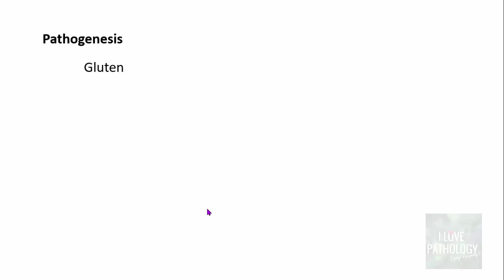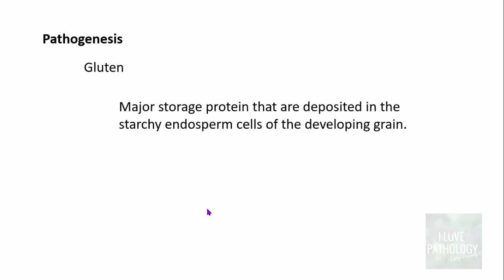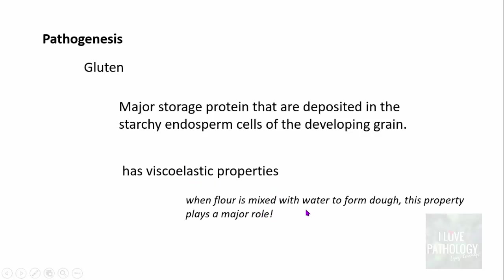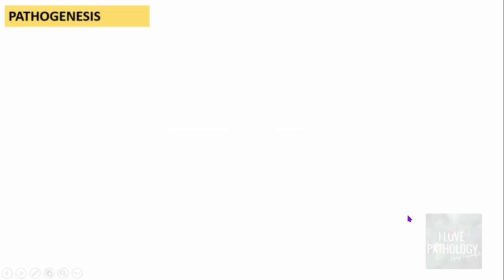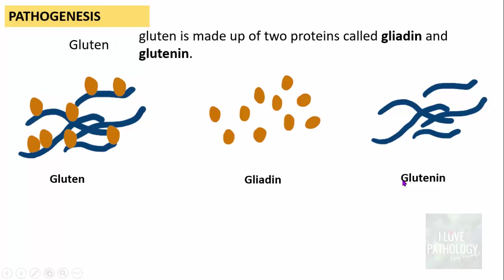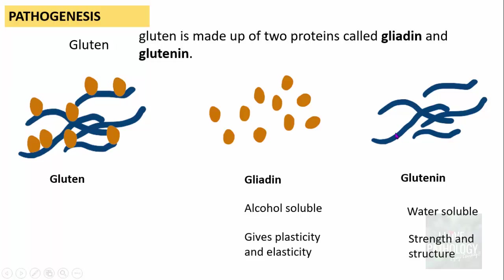Gluten is the most important culprit. Gluten is basically a major storage protein deposited in starchy endosperm cells of the developing grain. It has viscoelastic properties, important when flour is mixed with water to form dough. At the molecular level, gluten is made up of two proteins: gliadin, which is alcohol-soluble and gives plasticity and elasticity, and glutenin, which is water-soluble and gives strength and structure.